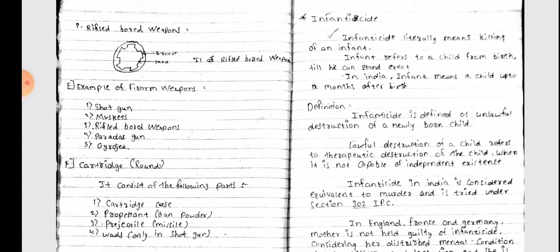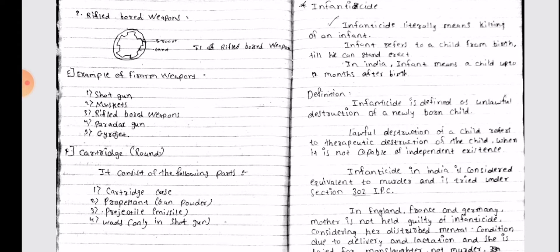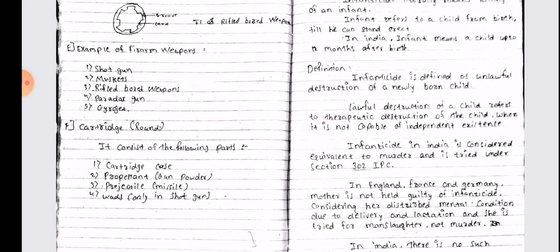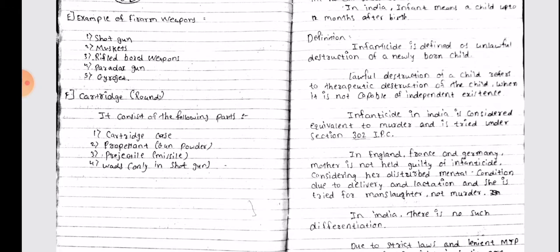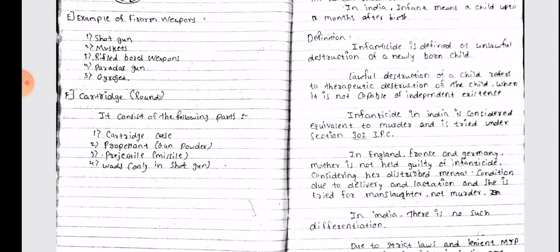Infanticide literally means killing of an infant. Infant refers to a child from birth till he can stand erect. In India, infant means a child up to 12 months after birth. Infanticide is defined as unlawful destruction of a newly born child. Lawful destruction of a child refers to therapeutic destruction of the child when it is not capable of an independent existence.